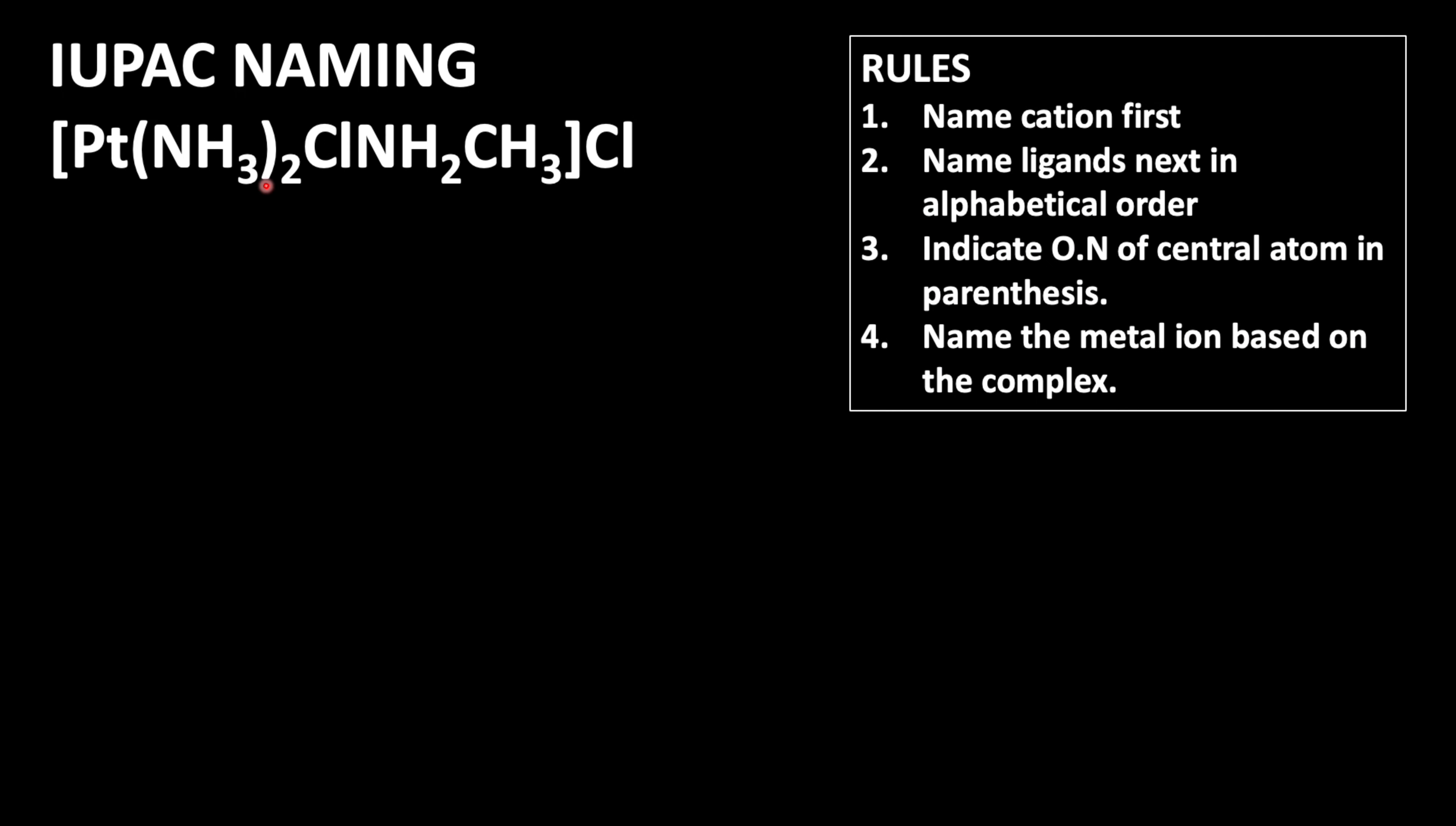So in our compound Pt(NH3)2Cl(NH2CH3)Cl, we have that counter ion anion. So we can start writing the name of the ligands in alphabetical order. We have different ligands here: one is amine, the two represents there are two amine groups present, then Cl group, then NH2CH3 methylamine is present.